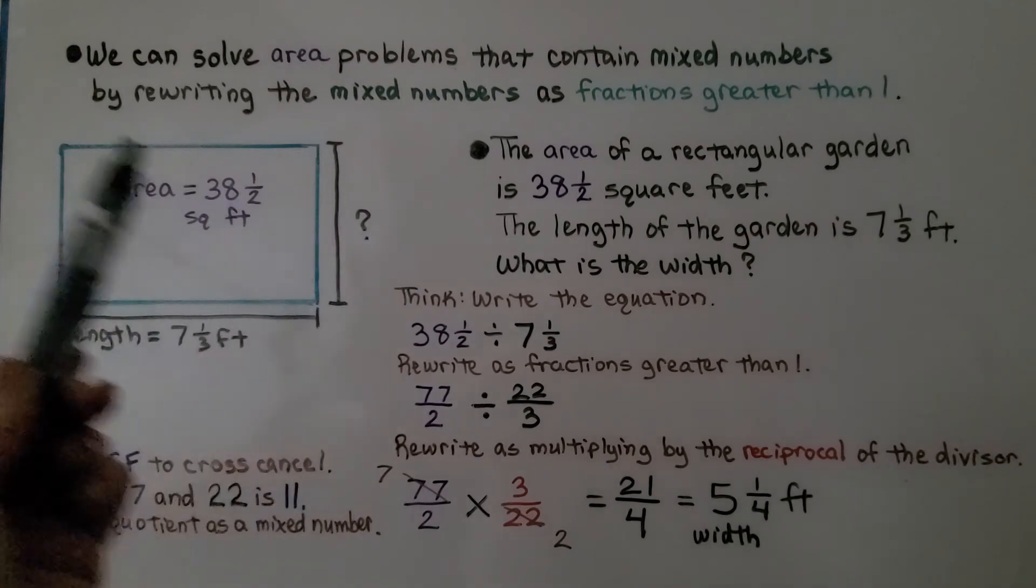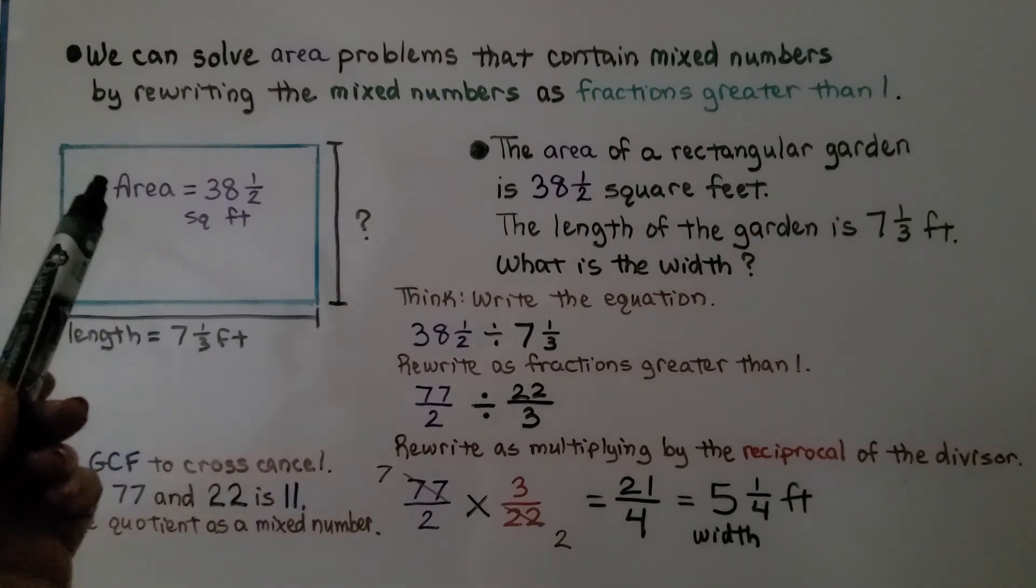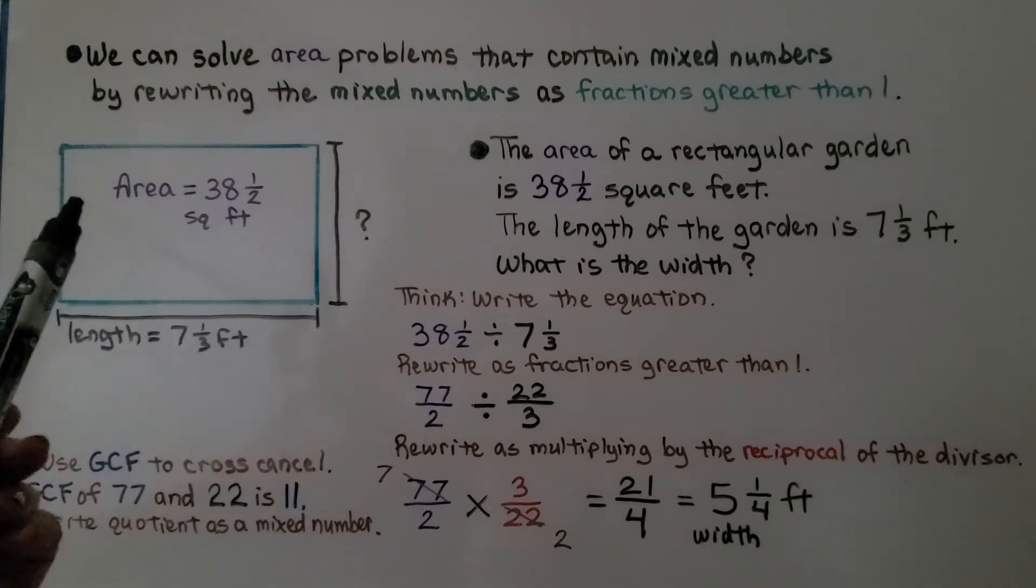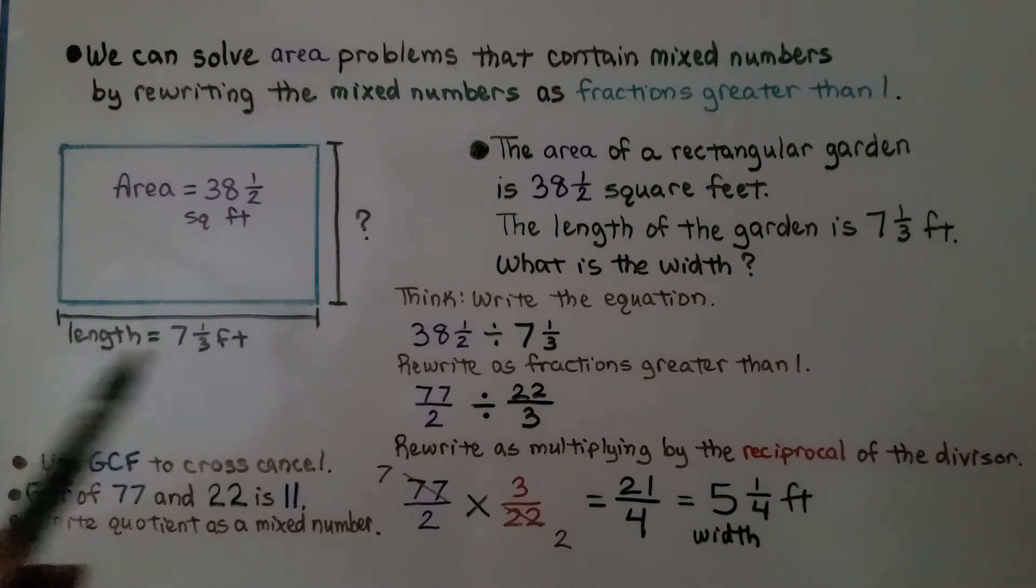The problem says the area of a rectangular garden is 38 and a half square feet. The length of the garden is 7 and 1 third feet. What is the width?